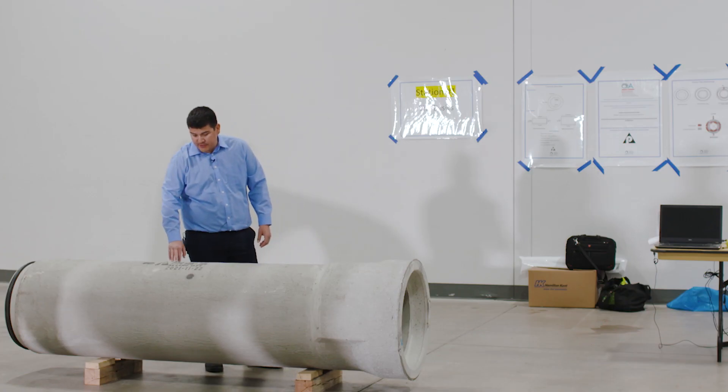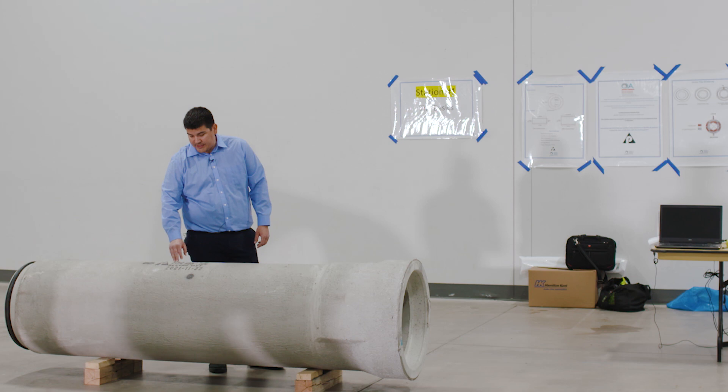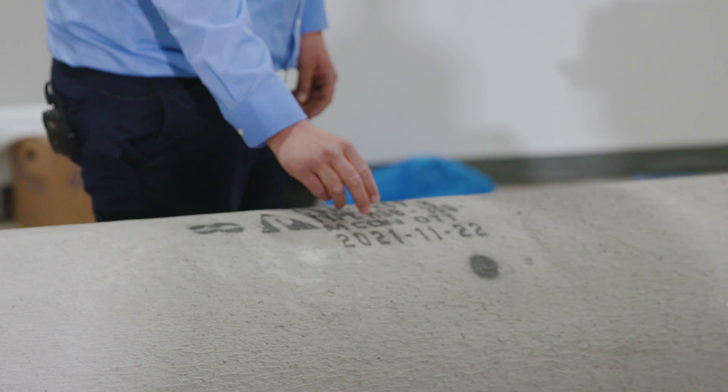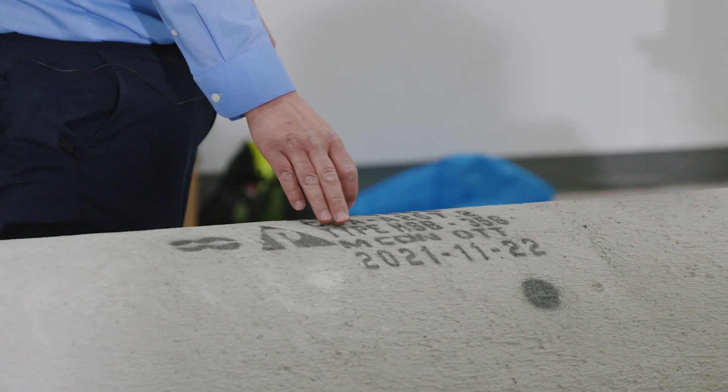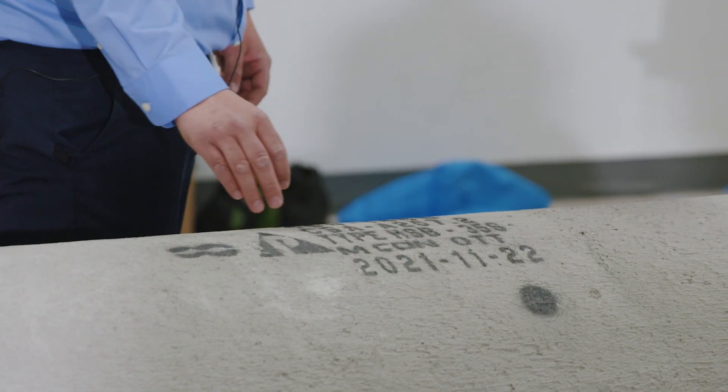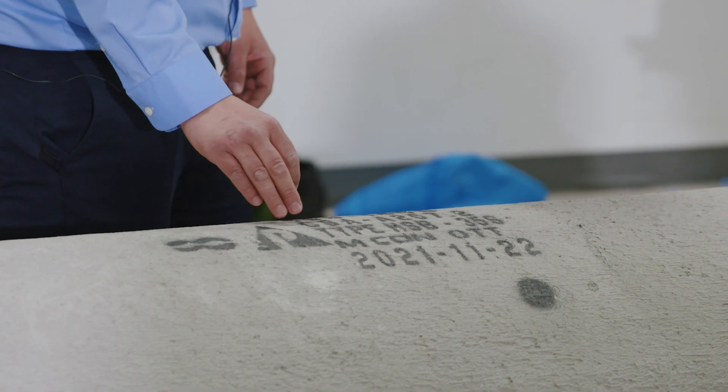All our products include a stencil. It's a requirement under CSA A257, so the information on the stencils is the same between the two companies. It has your manufacturer, location of the manufacturer, the date the pipe was made, type of cement being used to make the pipe, and then we have the specification that it was made to, and then the most important is the size and class.